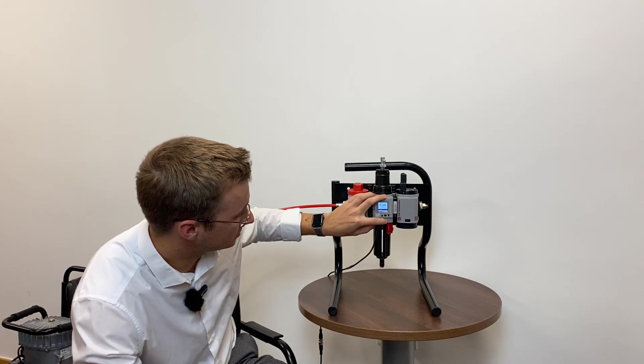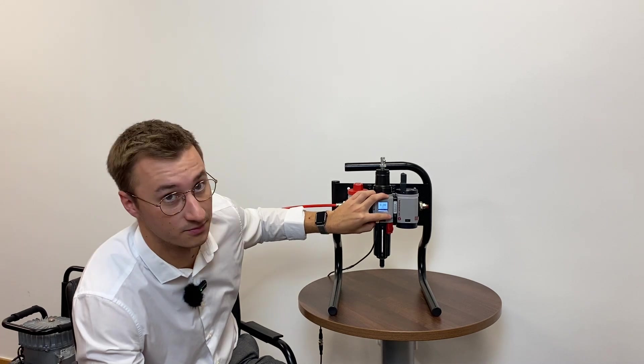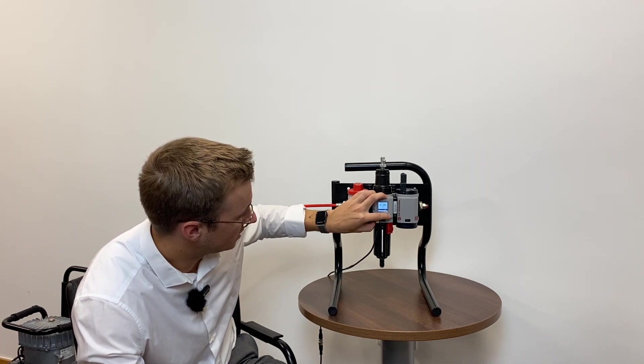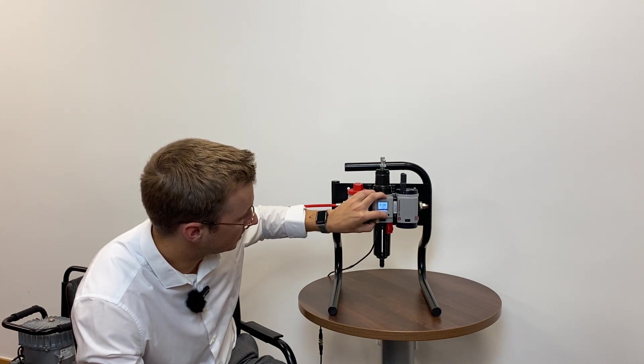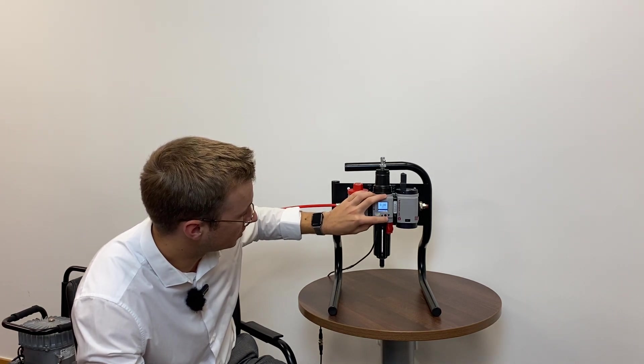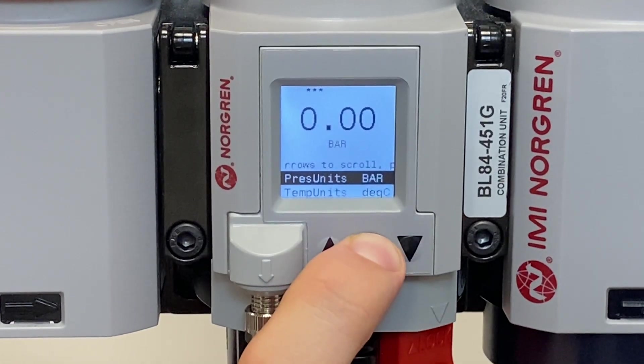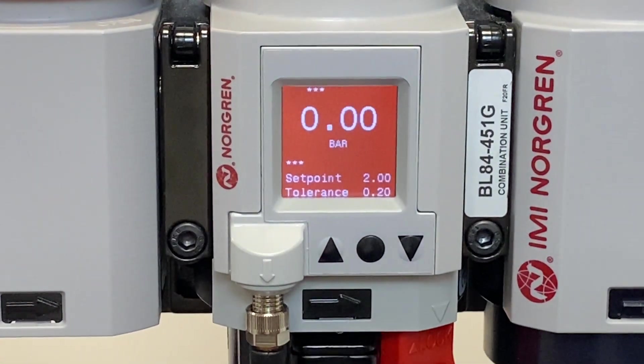Then you can scroll down to your tolerance and the same applies. You simply press onto what you want to alter, up or down to change the digit, and then long press to confirm. Once you're happy with the settings you've changed, you long press again. That brings you back to where you started.